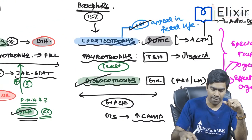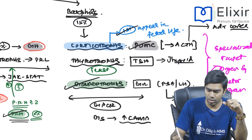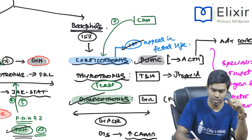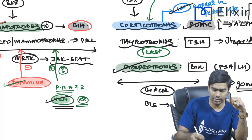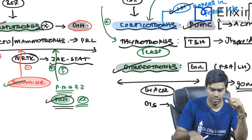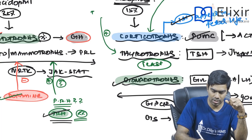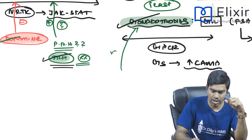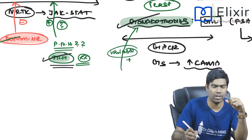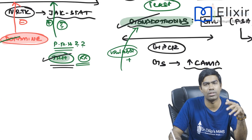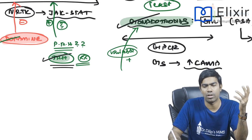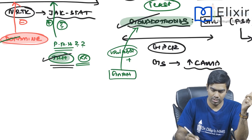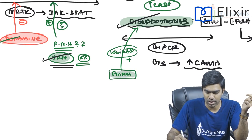Corticotrophs are under stimulatory control by CRH (corticotropin releasing hormone). Thyrotrophs are under stimulatory control by TRH (thyrotropin releasing hormone). Gonadotrophs are under variable control by GnRH (gonadotropin releasing hormone) — variable because it depends on whether the hormone release is continuous or pulsatile, which affects whether FSH or LH is preferentially secreted.